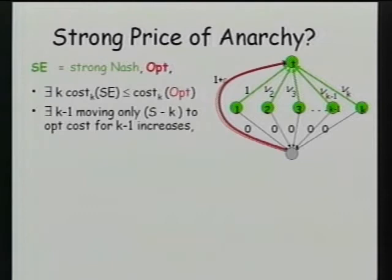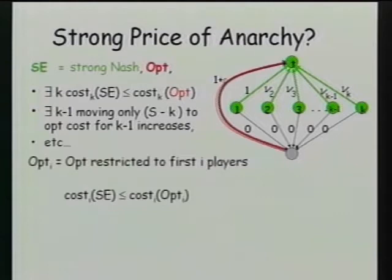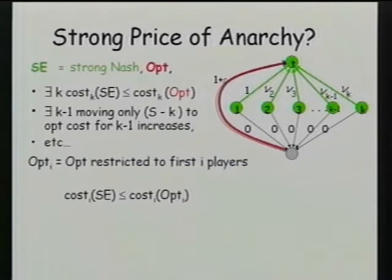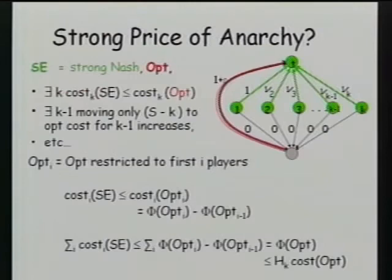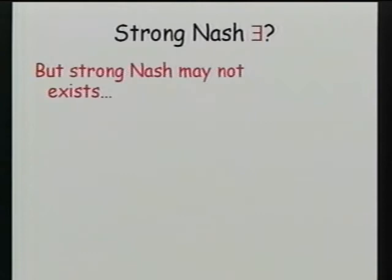Strong Nash equilibria have a big handicap: they tend not to exist. Here is a little network with a red user and a green user. The unique Nash equilibrium has them each building separate paths at cost 5. They could both switch to a cooperative solution costing 4 each — so the original was not a strong Nash equilibrium. But this cooperative solution is not a Nash equilibrium either, because each is even better off not cooperating. This is the prisoner's dilemma phrased as a cost sharing game.